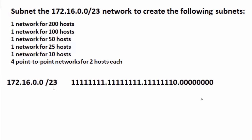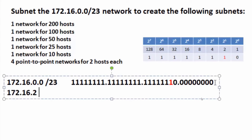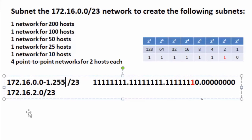By writing out the network and the subnet mask in binary, we see that we have a /23 subnet mask — 23 ones in binary. The last bit is in the twos place. Looking at the 8-bit grouping in the third octet, the last one is in the twos place, meaning the subnets go up by two. So the next subnet will be 172.16.2.0/23. The address space we're working with goes from 172.16.0.0 all the way up to 172.16.1.255.